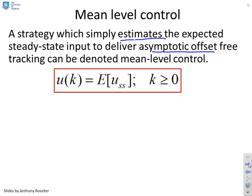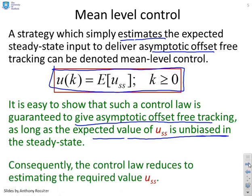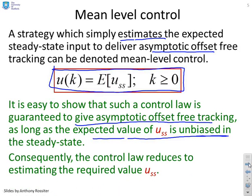So that's our control law. All we're doing is saying the current value for the input is the expected steady-state value of the input. Now it's easy to show that such a control law is guaranteed to give asymptotic offset-free tracking as long as this USS term is unbiased in the steady state. Consequently, our control law just reduces to estimating USS. That's a very simple control law.